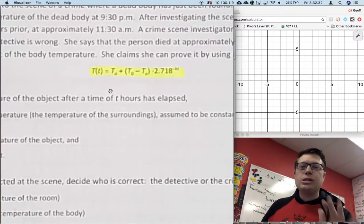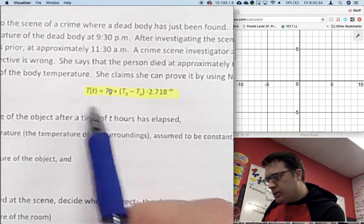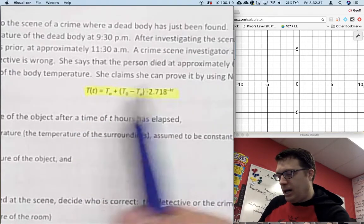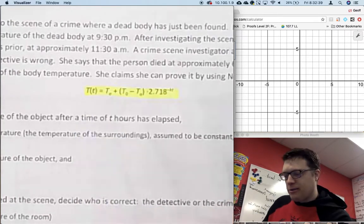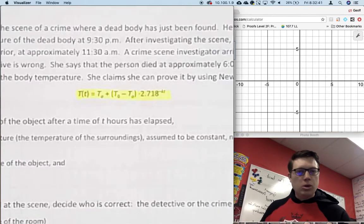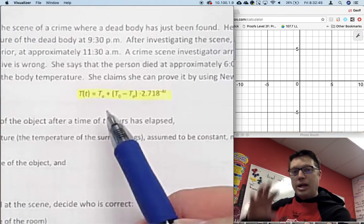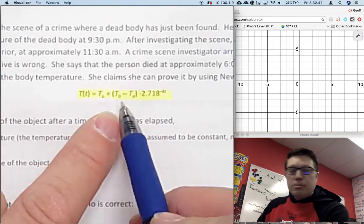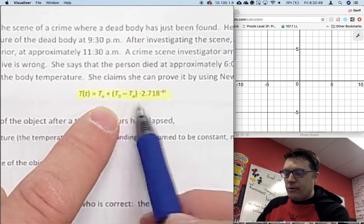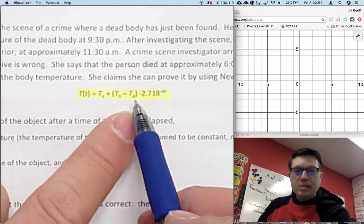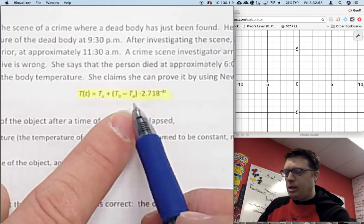Zooming in so you can see it, let's interpret this directly. T, as in the temperature, is dependent on the time that has transpired since the object began to cool. T_a is the temperature of the surrounding atmosphere.